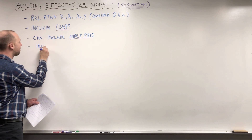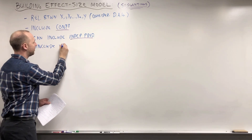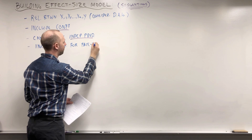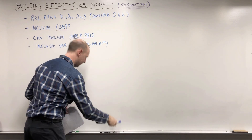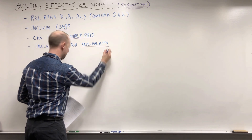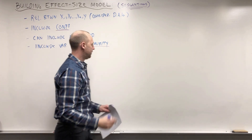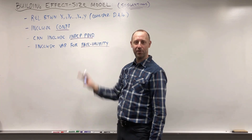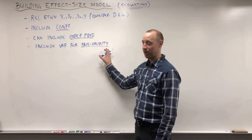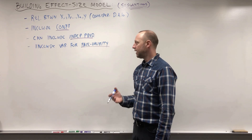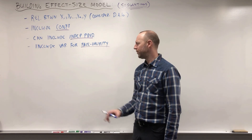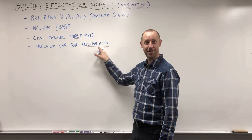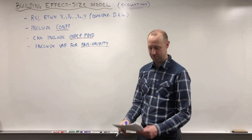You're probably going to want to include variables for face validity. Quite often there are certain variables that are known or believed to be related to the outcome, and if they're not included, the validity of your model might be questioned. For example, when looking at health outcomes, age and biological sex are commonly included in the model even if they're not strong predictors or confounders.